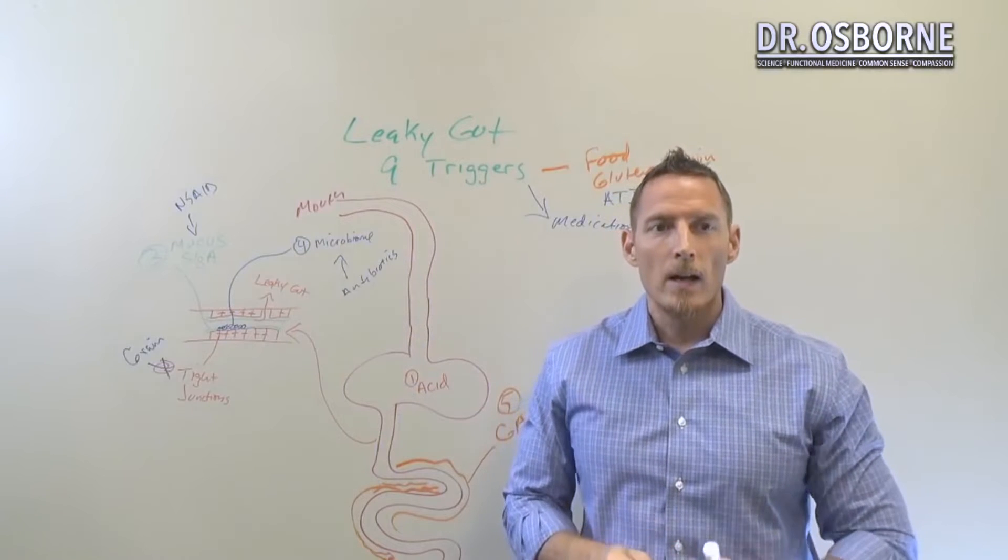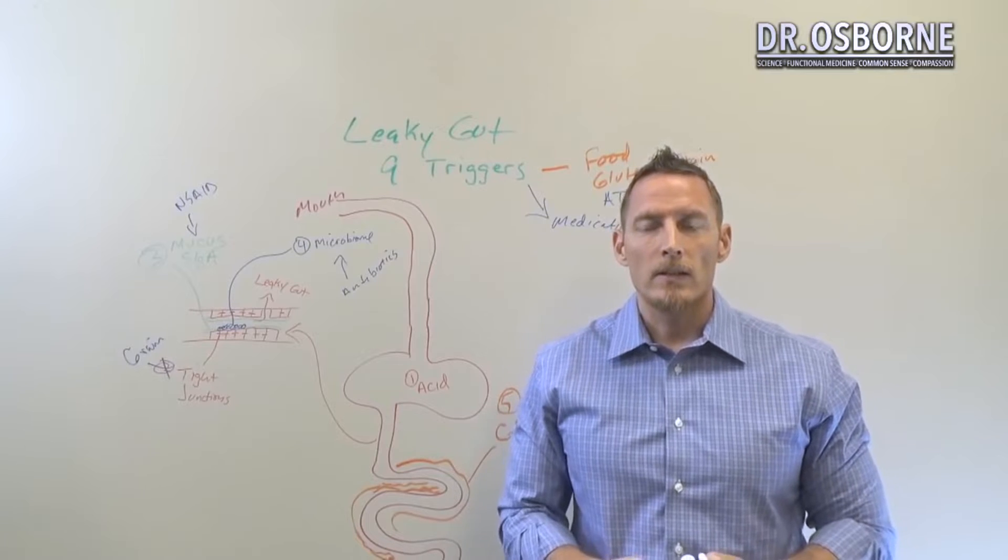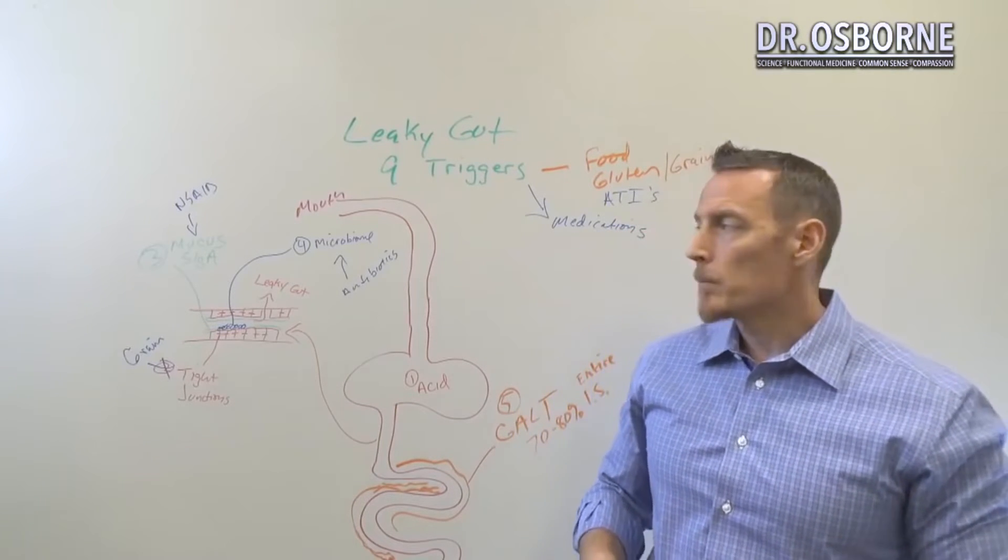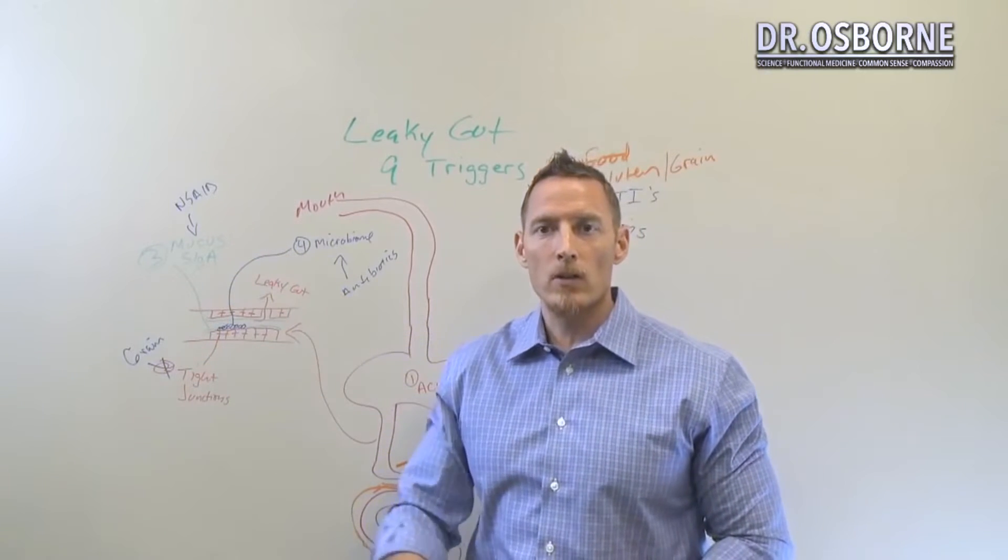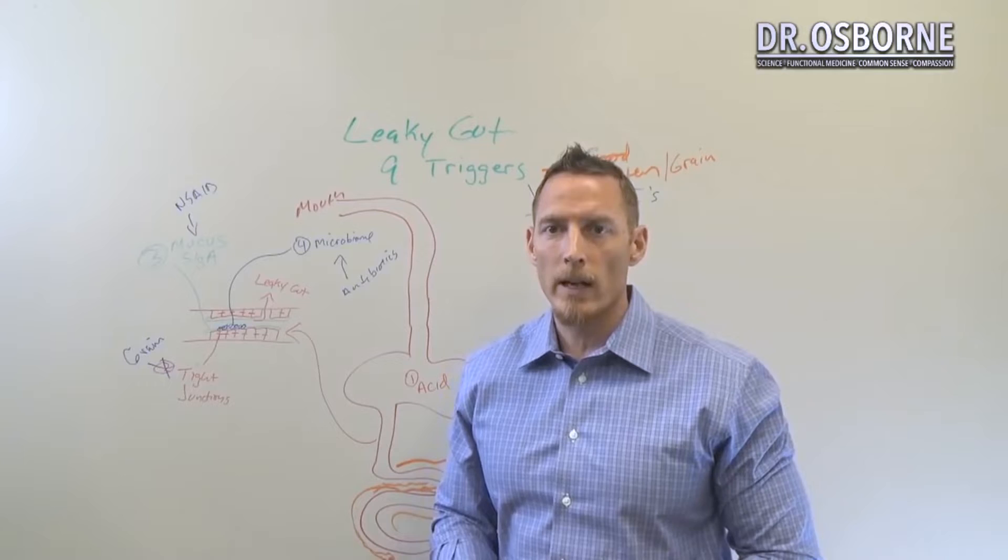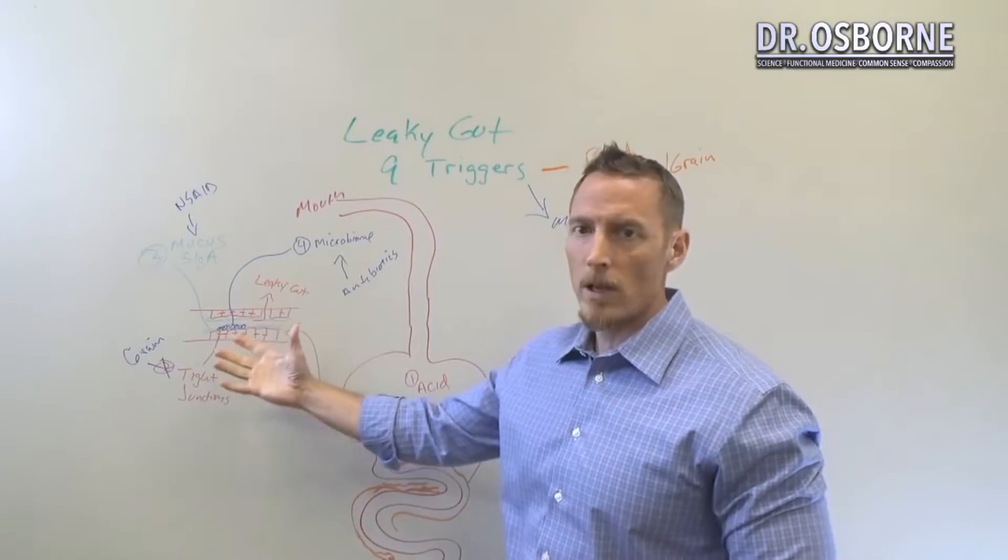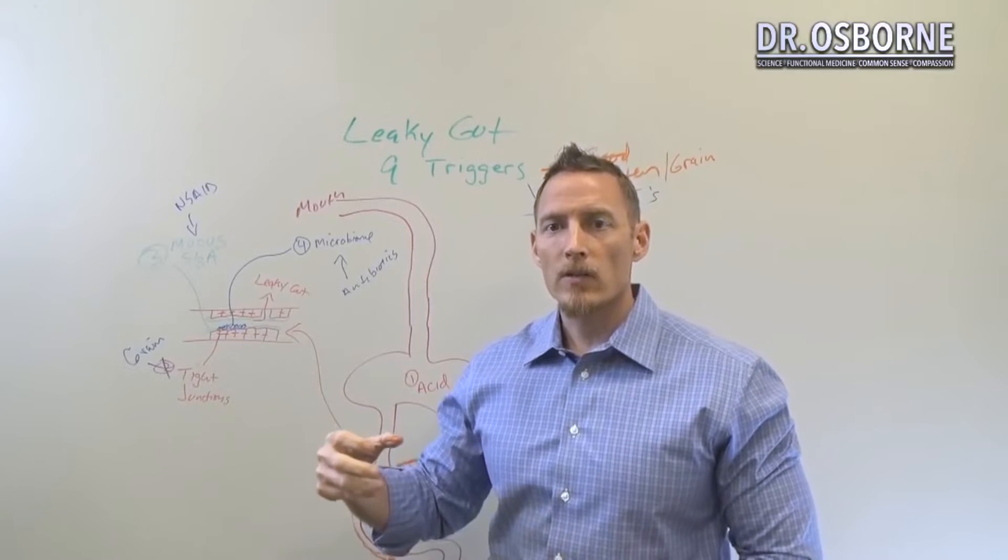I've got a study on aspirin and alcohol actually causing leaky gut problems in people. And I put alcohol in the drug category because alcohol is a drug. And just because it's not a prescription drug doesn't mean it's not a drug. But chronic alcohol use we know causes intestinal permeability. Aspirin we know causes intestinal permeability.